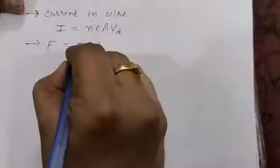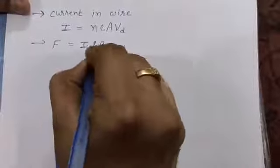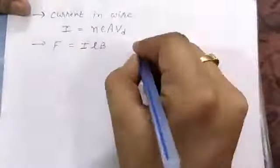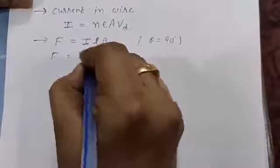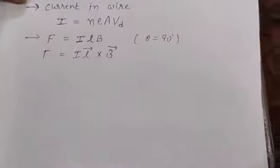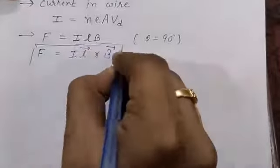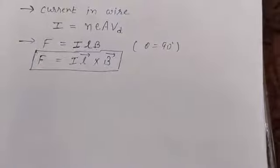So this is the formula of magnetic force on the current-carrying wire. In this case, current I and length L — the current-carrying element — and magnetic field B are perpendicular to each other, with θ = 90°. But in the universal case, we write this as F = I·L cross B.